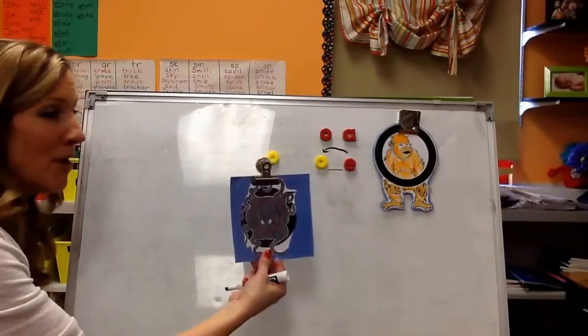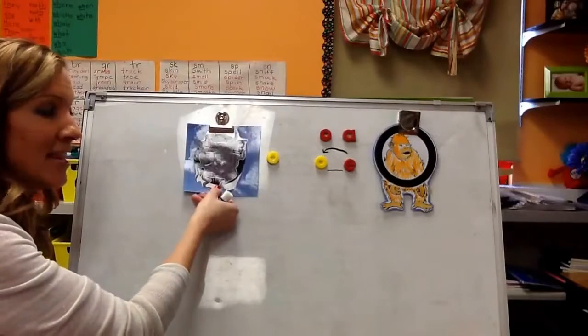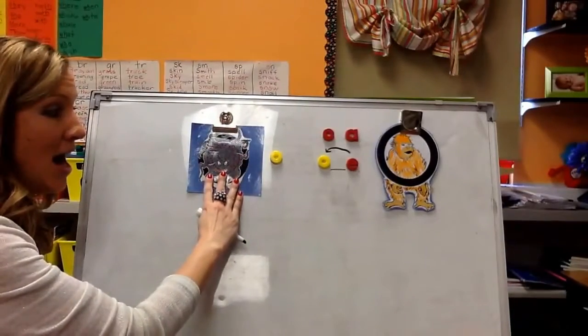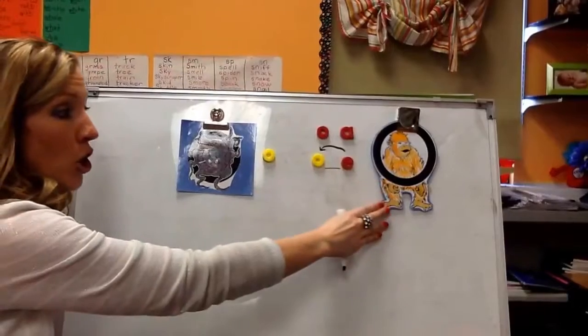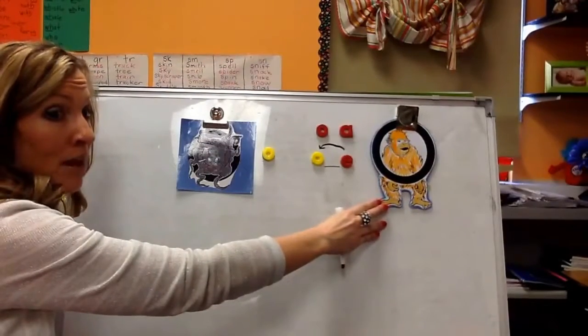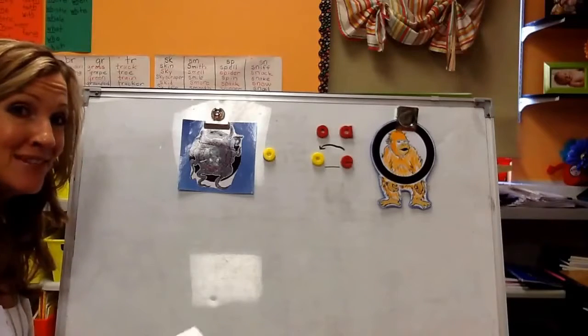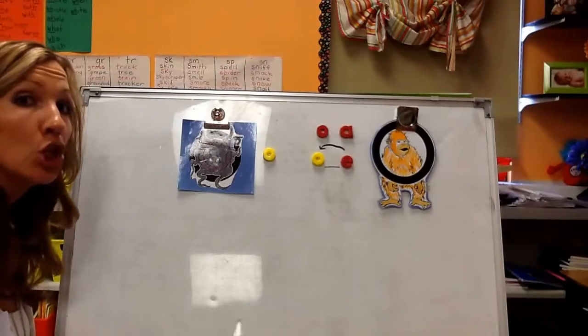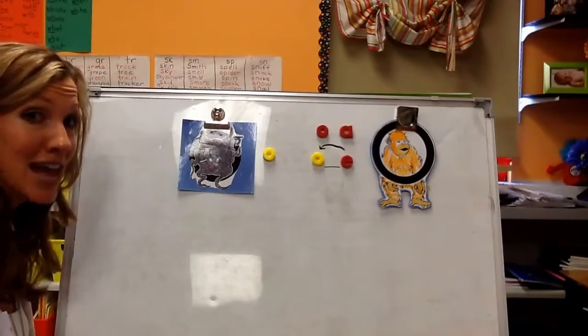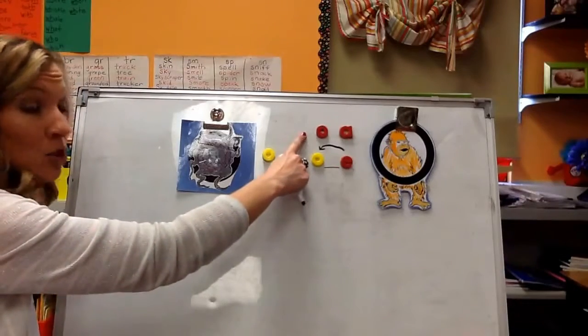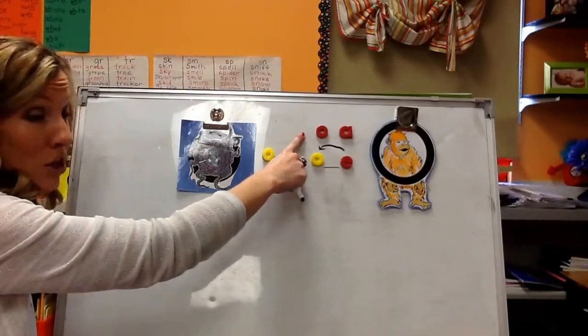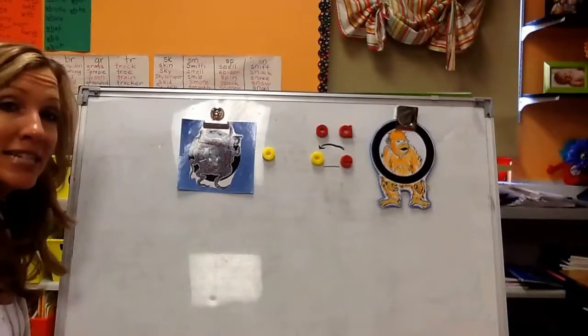Now, we also know that O by itself is ollie octopus. So today we're going to practice writing words and thinking in our heads. Do I hear ollie octopus or opal orangutan? Now, when I hear opal orangutan, I'm going to have to think, does it look right? Because that's what writers ask themselves. And I'm going to need to think, does it look right to write it as O-A or O consonant E?